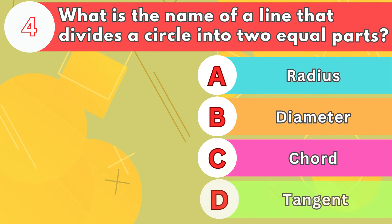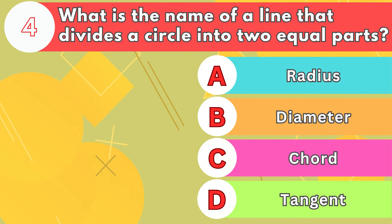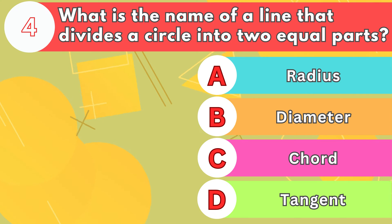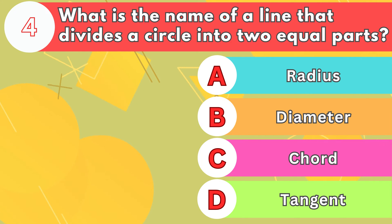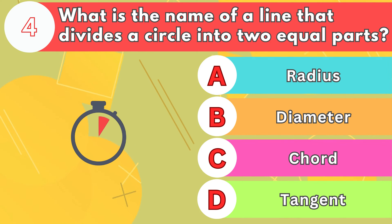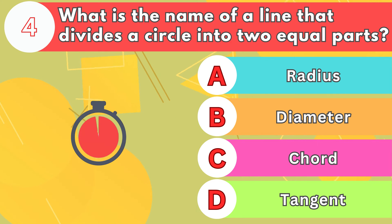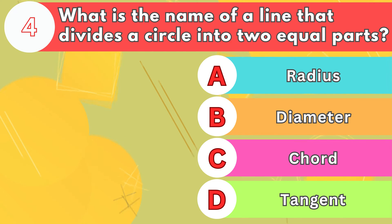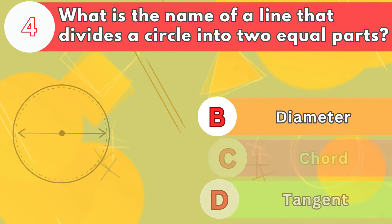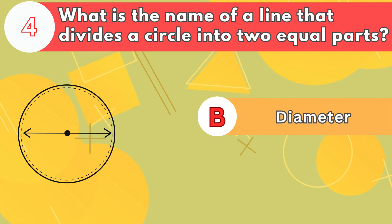Number 4. What is the name of a line that divides a circle into two equal parts? The answer is letter B, diameter.